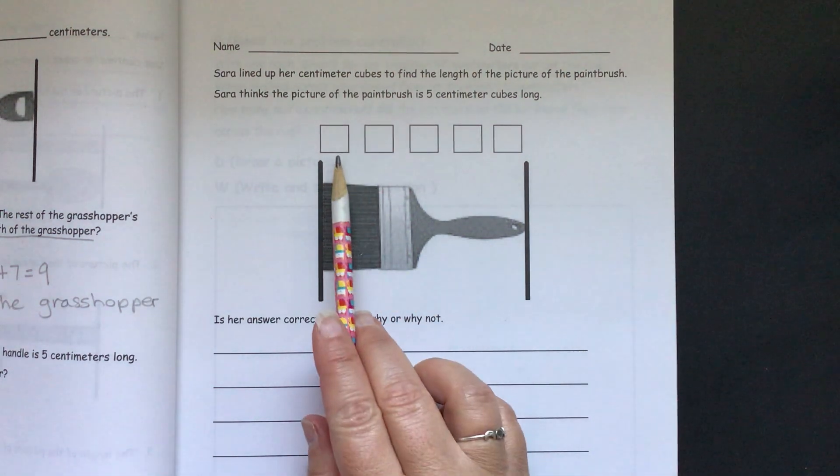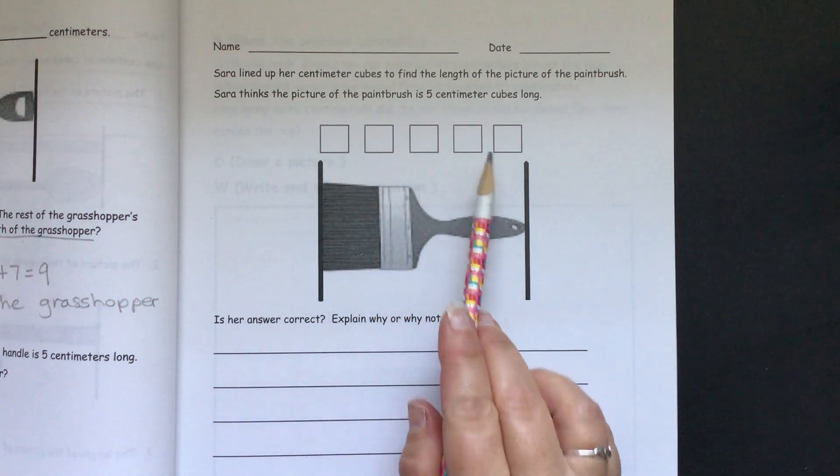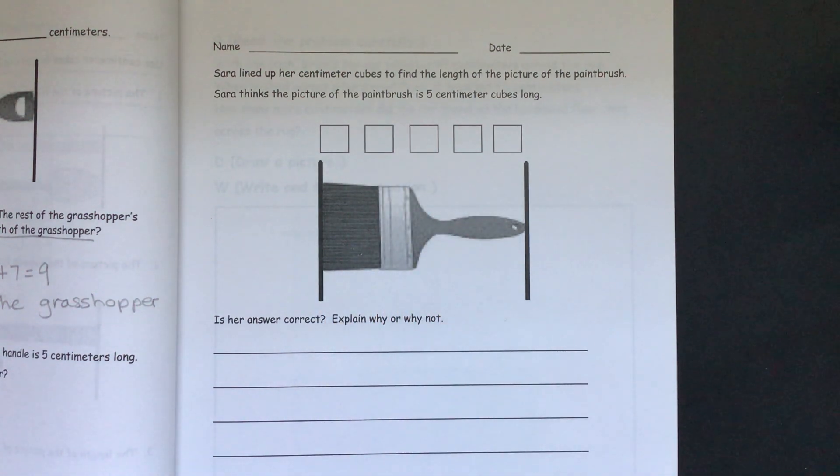So you see she has spaces between her centimeter cubes. So you think back, I thought it was really important that you make sure you have your centimeter cubes touching to make sure you have an accurate measurement. So think about that when you are answering this question. Is she correct that this paintbrush is only five centimeters long? Well, I hope this helped.